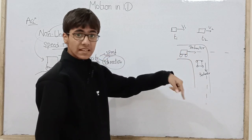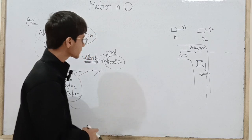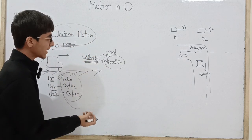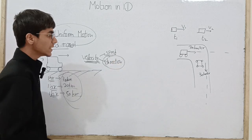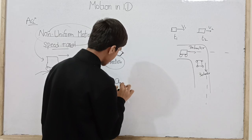To ye yahaan phir direction mein bhi change aaya. Lekin velocity to change ho hi gaya kyunki velocity mein direction bhi matter karta hai. To clearly yahaan phir direction mein change aaya, is case mein bhi velocity mein change hai. To agar kisi object ke paas in an x direction.